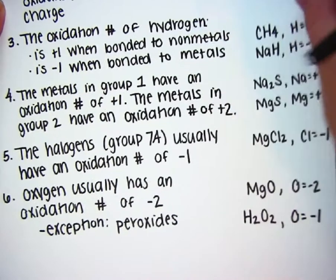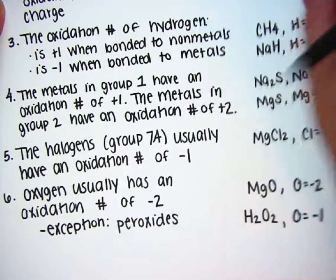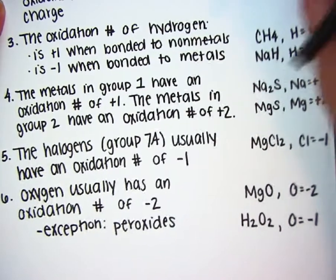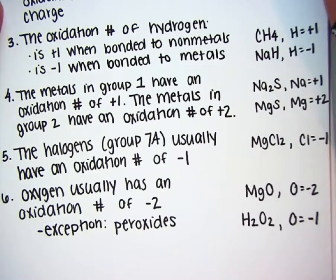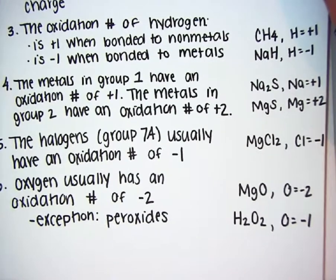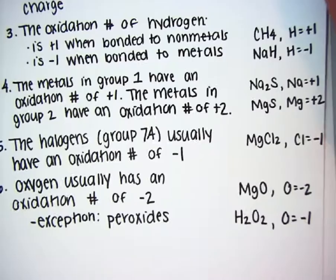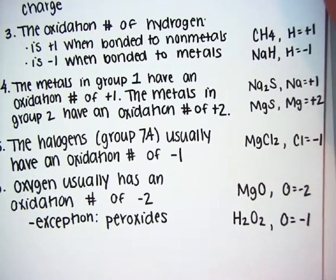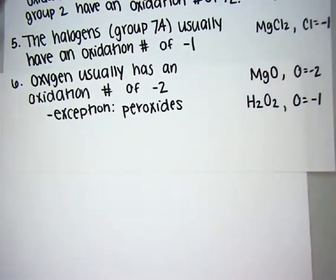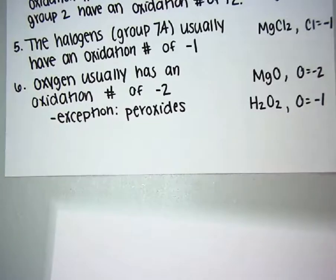Those are the main rules to know: hydrogen, oxygen, group 1, group 2, and group 7. For everything else, we're going to work backwards to figure out the oxidation number.